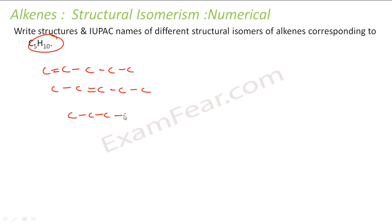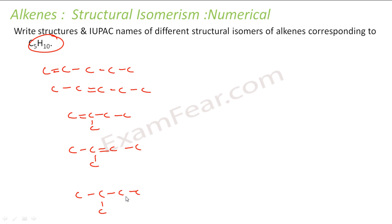Now I will try with four carbons in the straight chain and one in the branch. With this branched structure, I can put a double bond here — that gives one structure. Or I can put a double bond here — that gives another structure. If I put the double bond at other positions, it becomes the same. Now let's try for three carbons in the main chain and two in the branch, but in that case I will not be able to put a double bond, so I will not take this structure, because I must have at least one double bond.